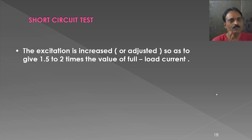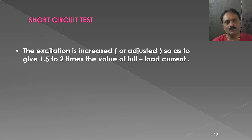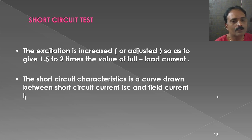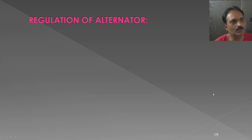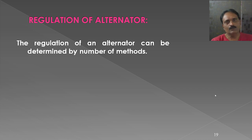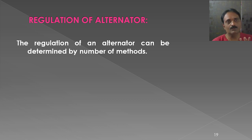The short circuit test is generally conducted up to 150% to 200% of the full load current value. There are many methods to calculate the regulation of an alternator — synchronous impedance method, ZPF (zero power factor) method, MMF method, and others — but here we discuss the synchronous impedance method, for which the open circuit test and short circuit test data are essential.